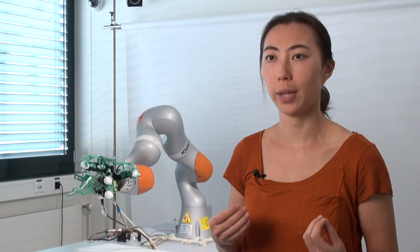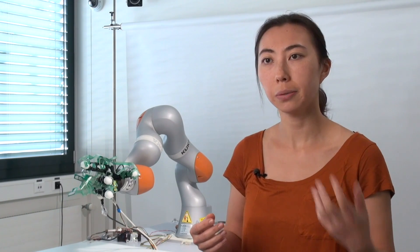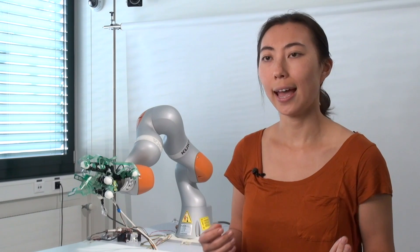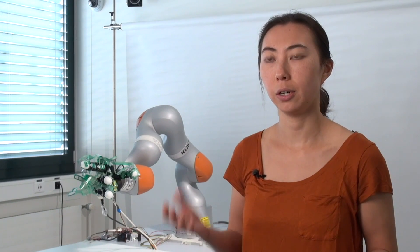This is exactly an implementation of shared control because what we have is user intention, basically the finger movements, and also the robotic automation which closes the hand around an object and keeps it there if the user wants, so that a grasp is more robust.